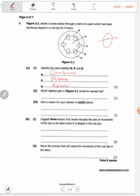Which labeled part in Figure 3.1 would be stained red? Q. Q is the xylem. The xylem is responsible for carrying liquid something like water and dyes, so it can be stained with a dye. Q carries dyes through water.